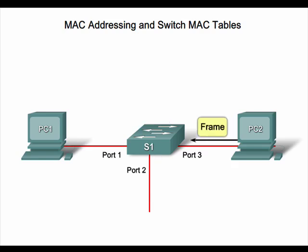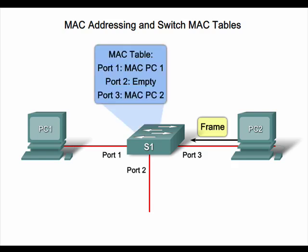In Steps 4 and 5, when the destination PC2 replies back to PC1, the switch populates the MAC address for PC2 and the port to which it is connected into the MAC address table. At this point, the switch has learned that PC1 is connected to port 1 and PC2 is connected to port 3. Since the switch has now learned the MAC address and associated ports of PCs 1 and 2, if PC1 were to send another message to PC2, the switch would send the frame out the appropriate single port rather than broadcast it out all ports. This is the process that switches use to learn which MAC addresses are connected to specific switch ports.